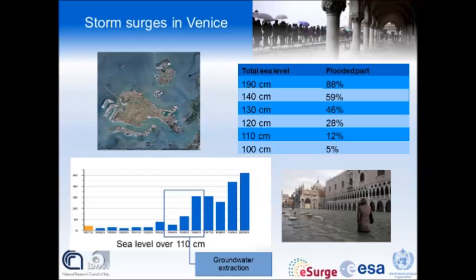This is the sea level record over the last century in Venice, showing storm surge events over 110 centimeters. At the beginning of the century there were fewer than five storm surge cases per year, but now we are around 50. There was a big increase in the 1950s due to groundwater extraction, an anthropogenic cause that produced subsidence of the city. That extraction has since stopped, but we remain at around 50 storm surge cases per year.